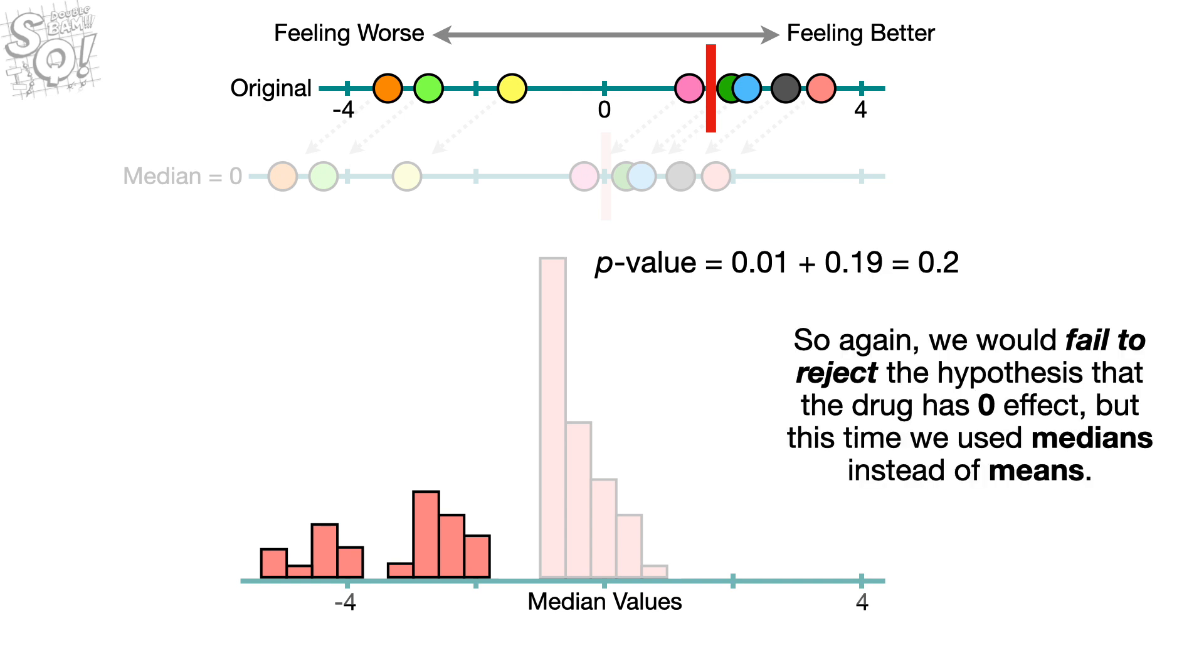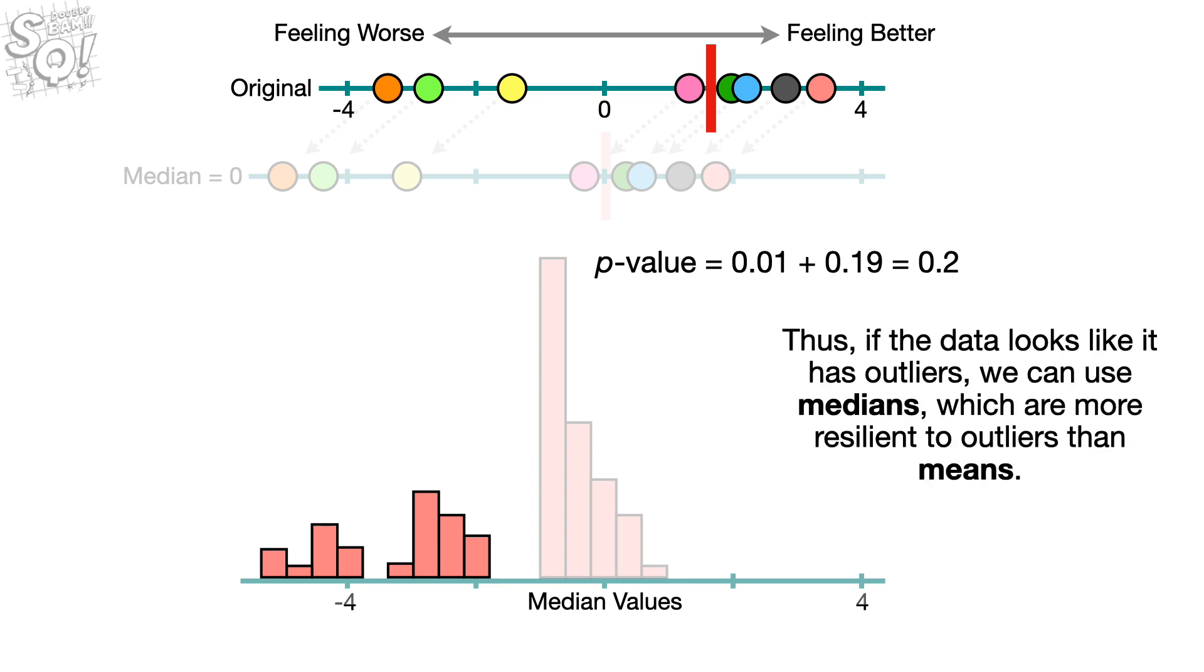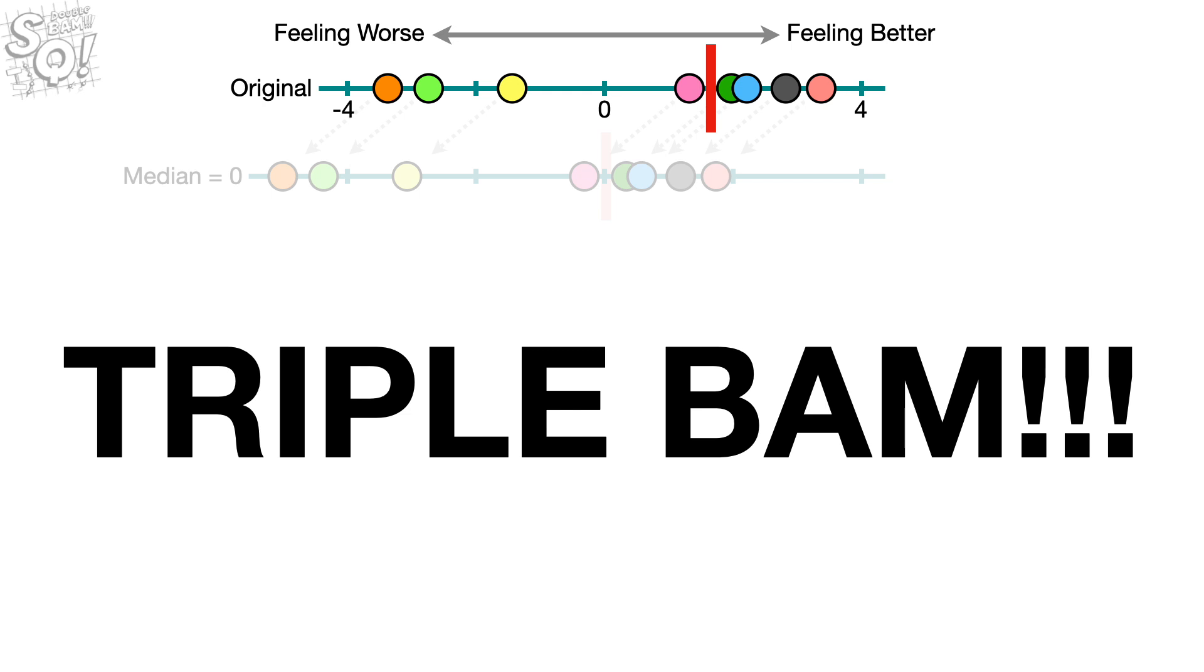So again, we would fail to reject the hypothesis that the drug has 0 effect, but this time we use medians instead of means. And the point of this example is that we can use bootstrapping to test whatever we want. Thus, if the data looks like it has outliers, we can use medians, which are more resilient to outliers than means. Triple bam!